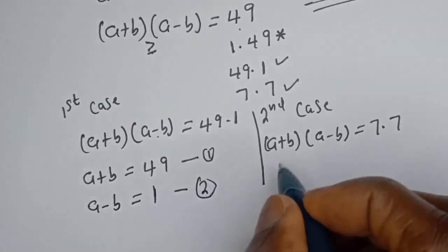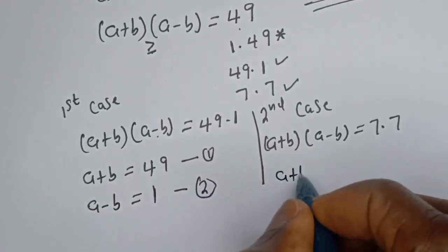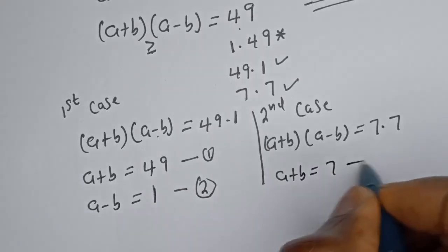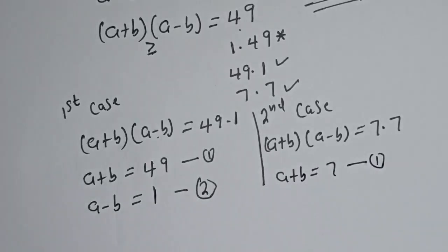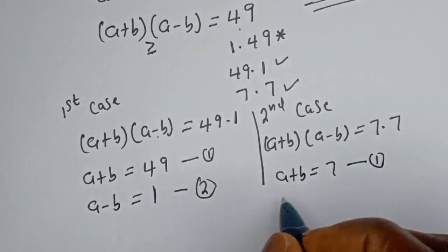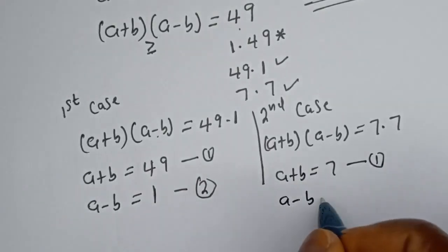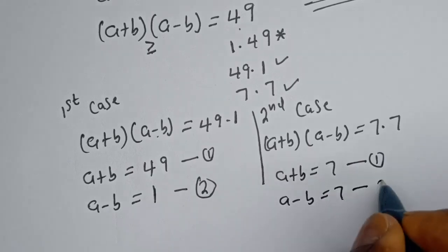For the second case: A plus B equals 7 — call this equation 1 — and A minus B equals 7 — call this equation 2.